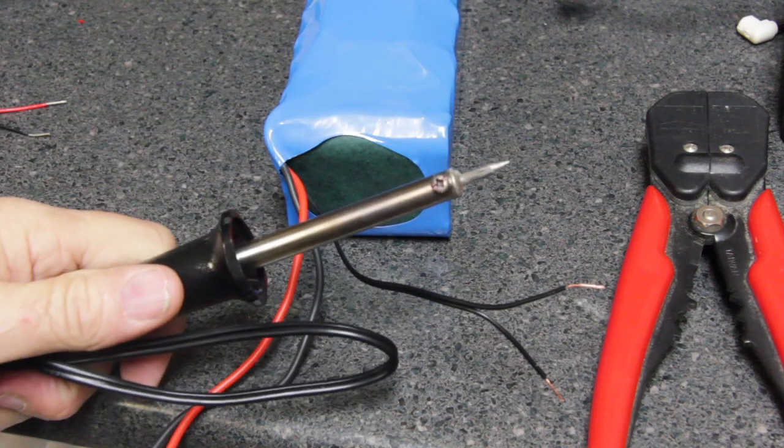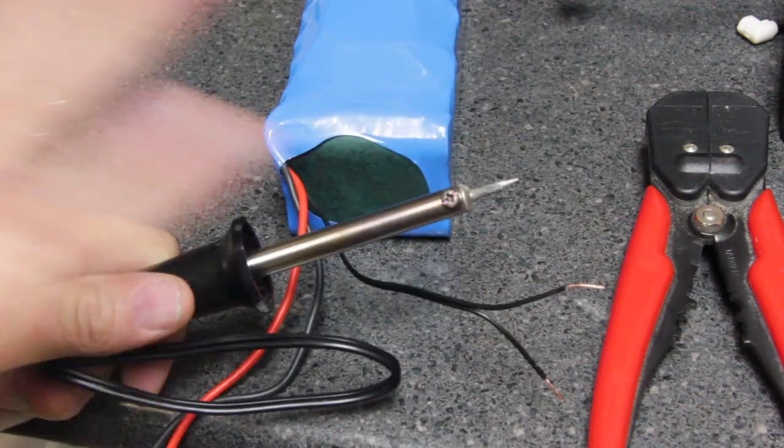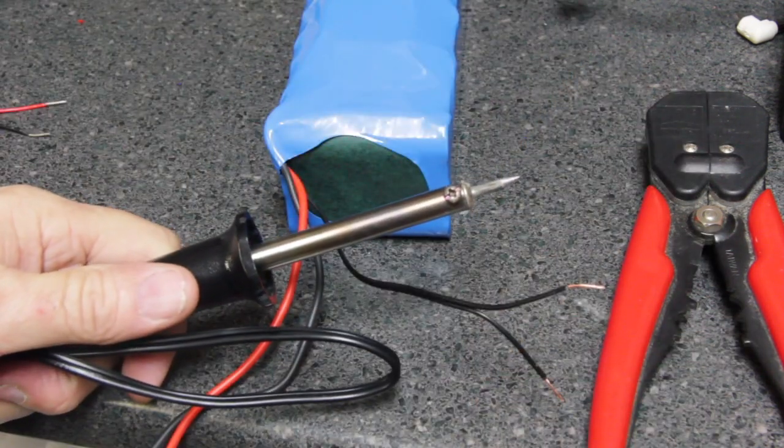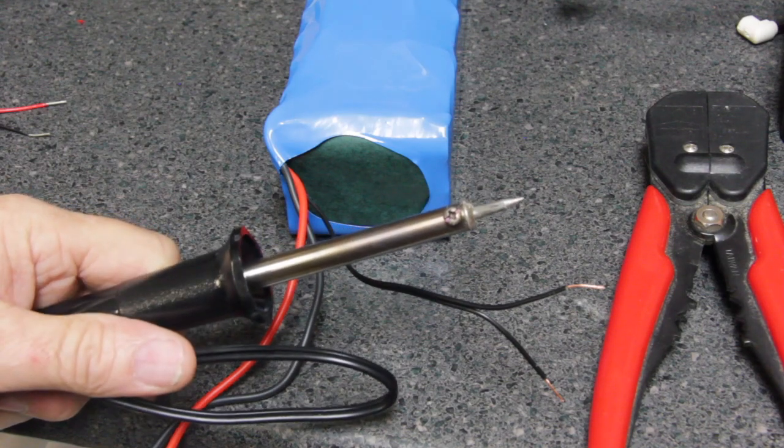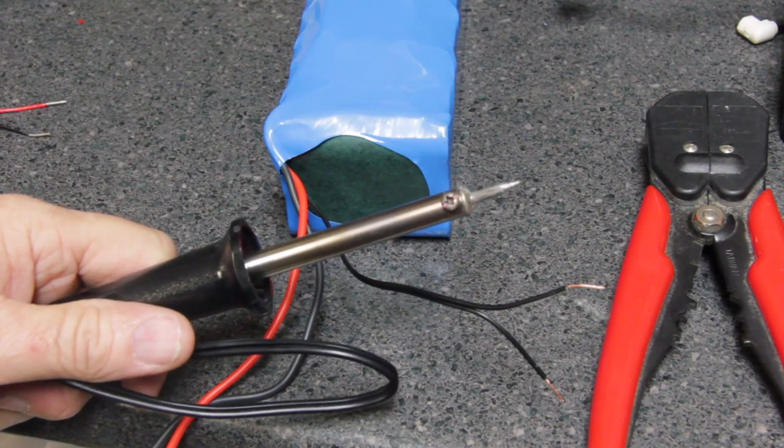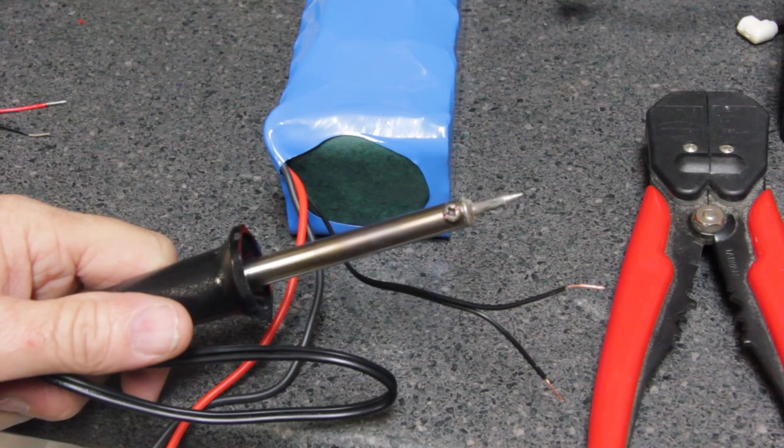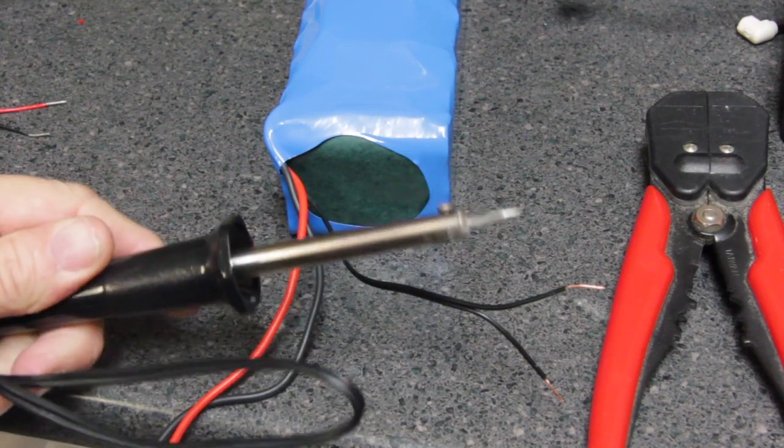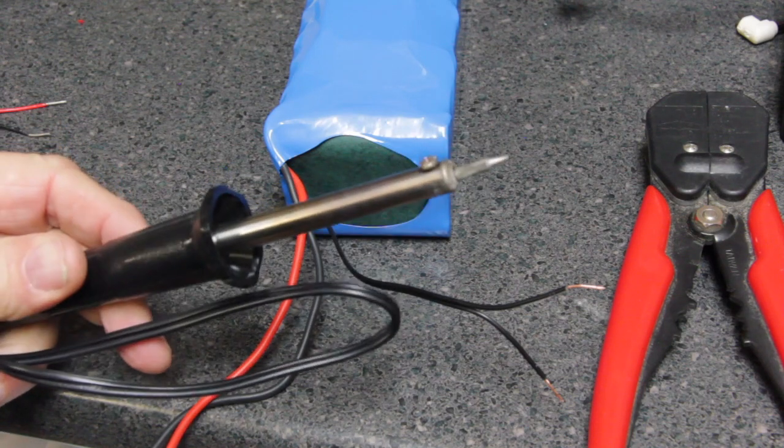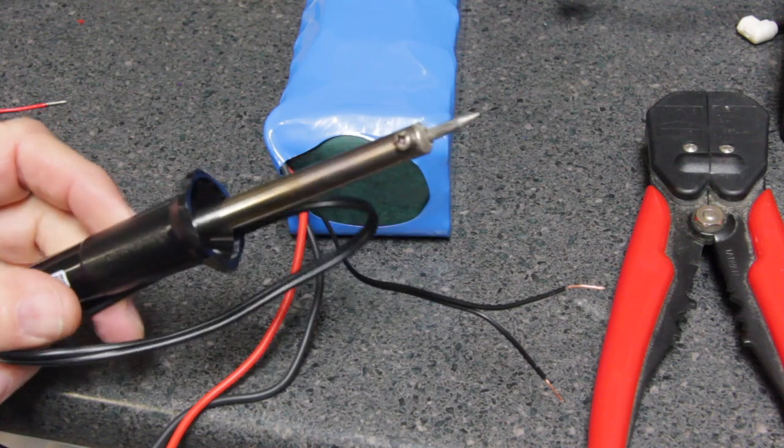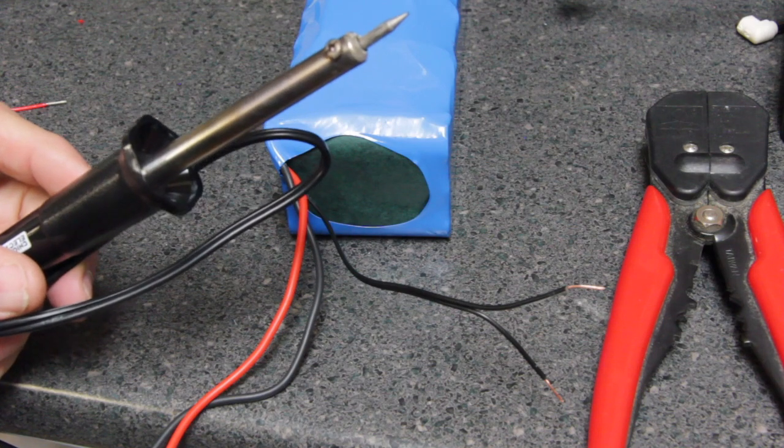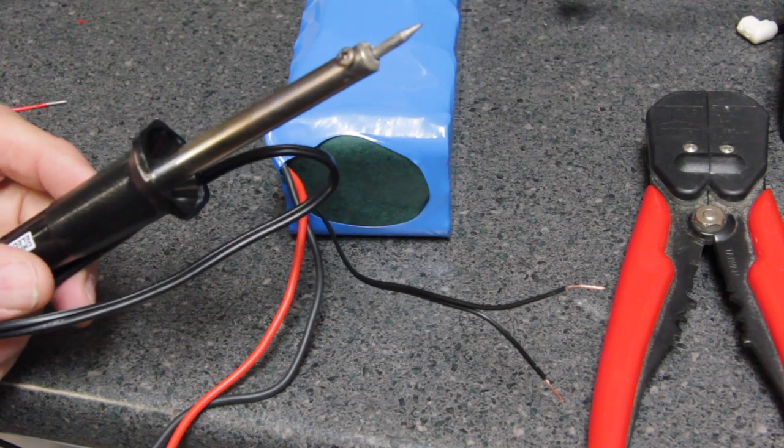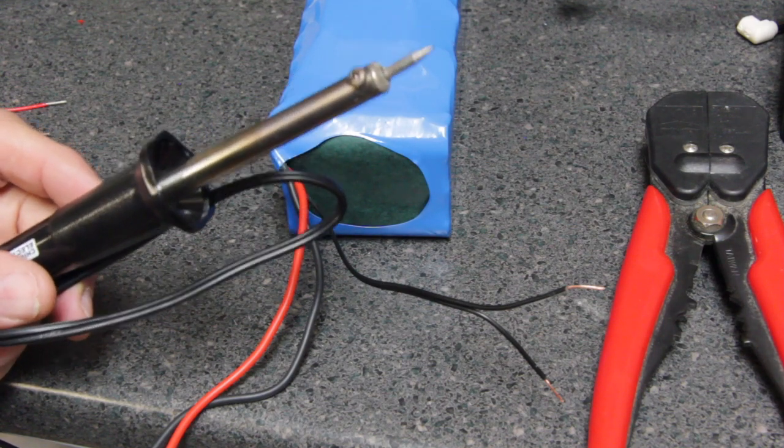Before we plug the soldering iron in, we want to clear a spot on our desk here to work. We don't want a lot of clutter there. We want plenty of room so we don't burn ourselves or melt things around us. The soldering irons get very hot—they can get 700 degrees really easily. So clear your desktop, make yourself a nice space to work in, but we aren't going to plug in the soldering iron just yet. We're going to do some prepping first.